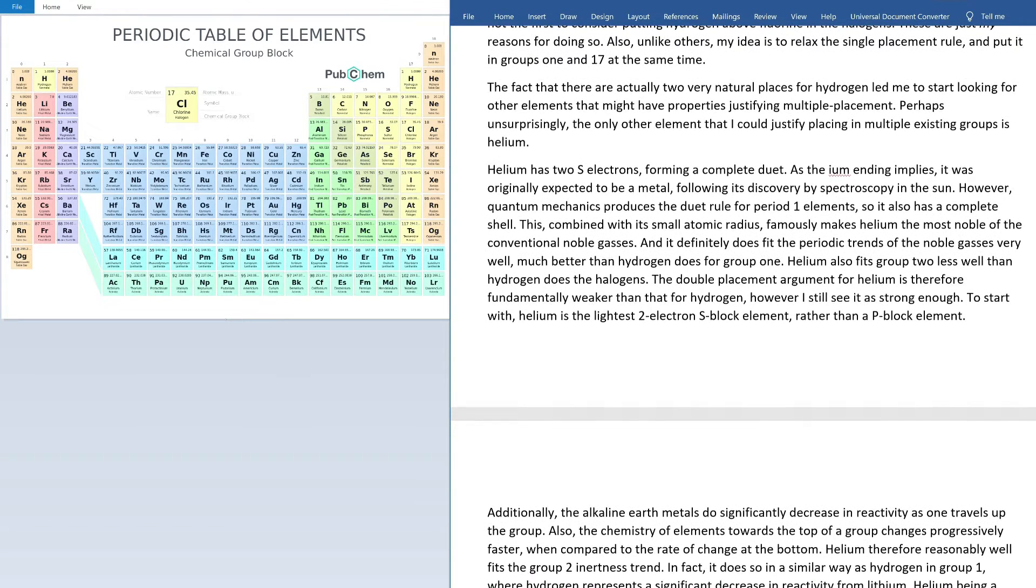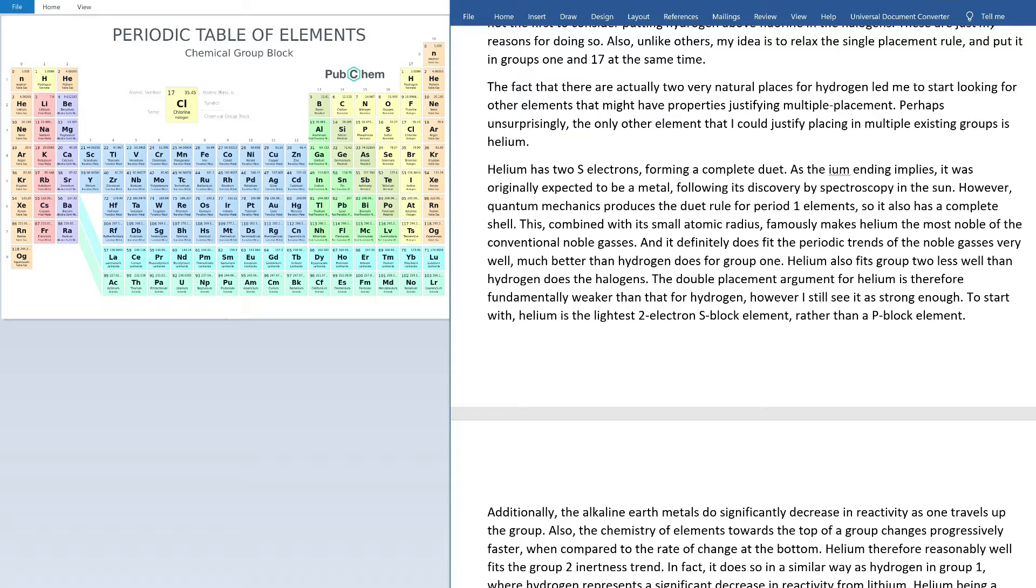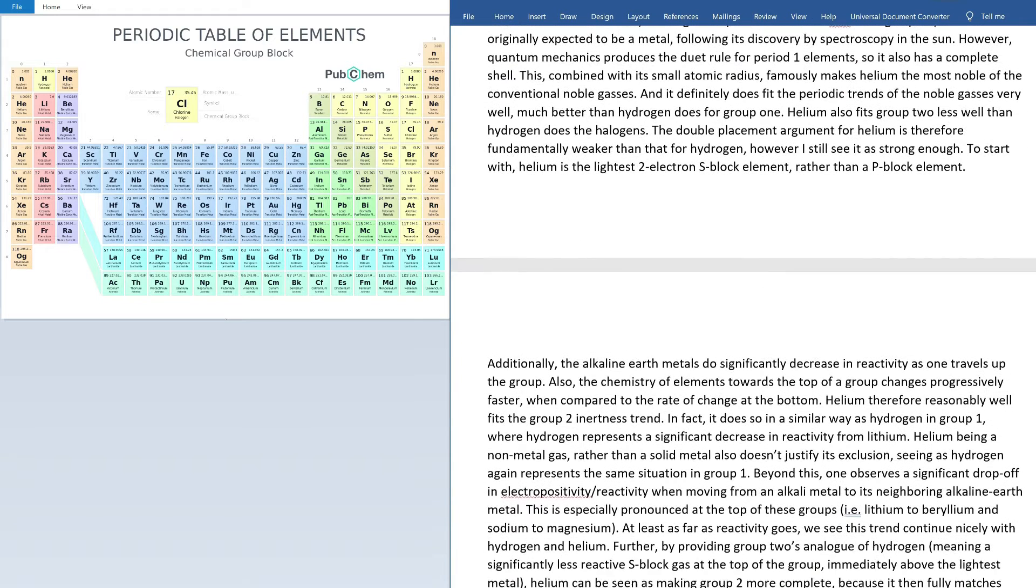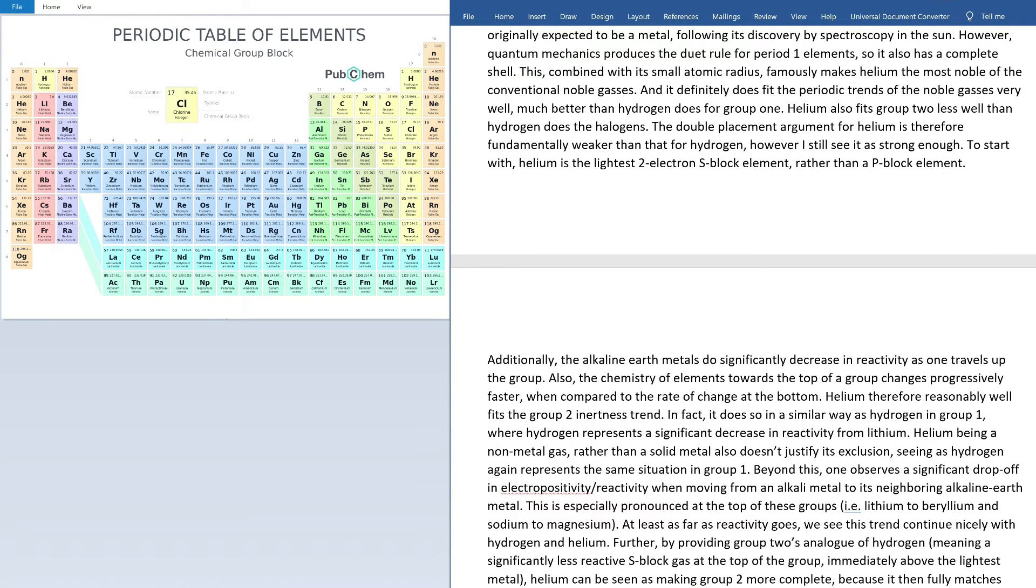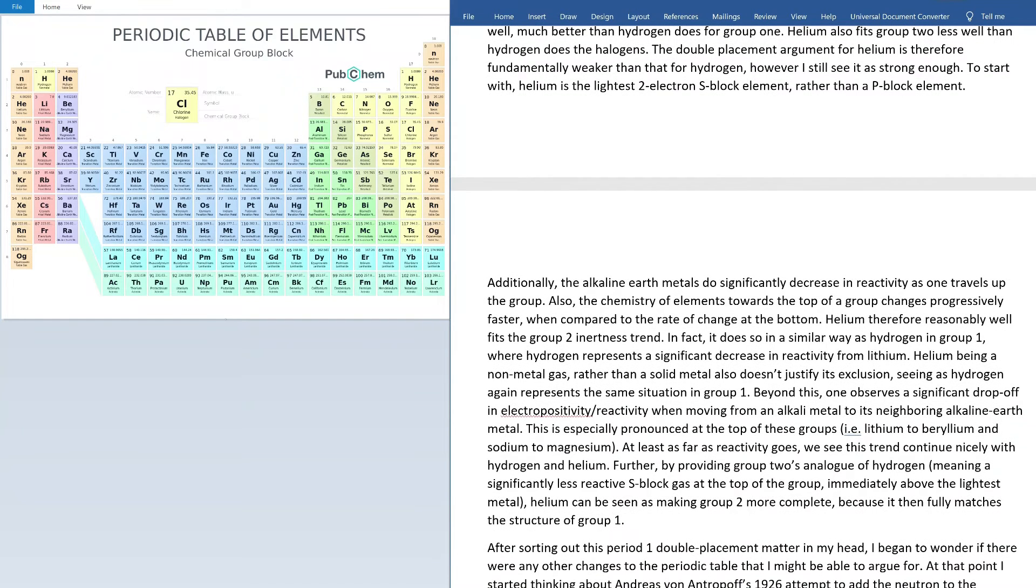This, combined with its small atomic radius, famously makes helium the most noble of the conventional noble gases, and it definitely does fit the periodic trends of the noble gases very well, much better than hydrogen does for group one. Helium also fits group two less well than hydrogen does the halogens. The double placement argument for helium is therefore fundamentally weaker than that for hydrogen. However, I still see it as strong enough. To start with, helium is the lightest two-electron S-block element rather than a P-block element. Additionally, the alkali metals do significantly decrease in reactivity as one travels up the group.